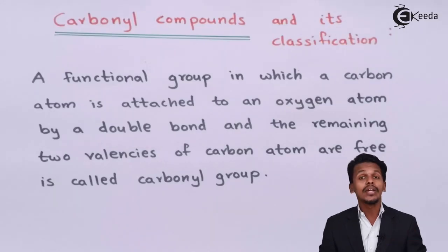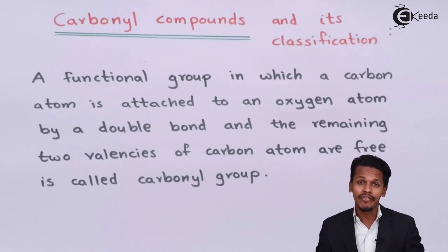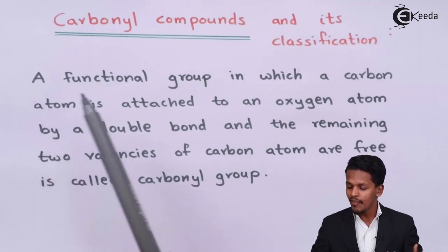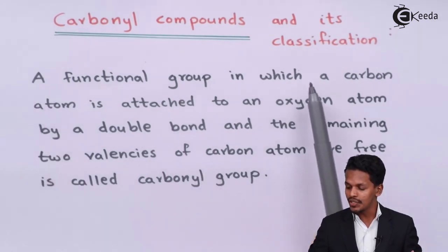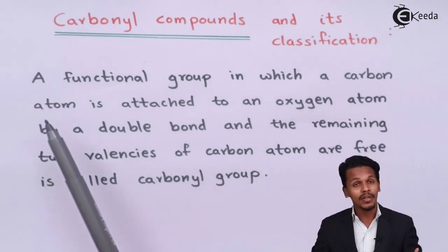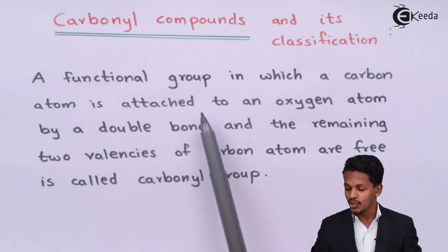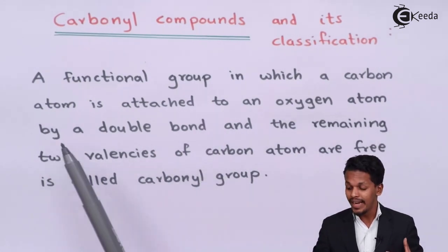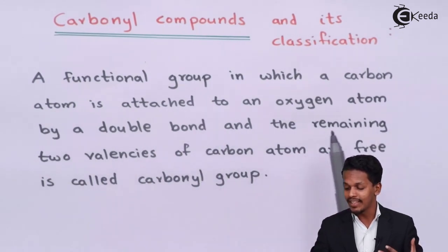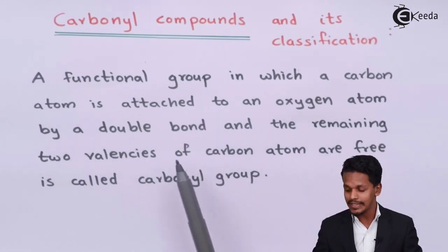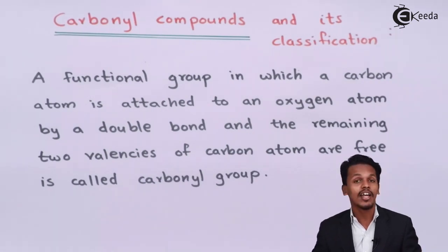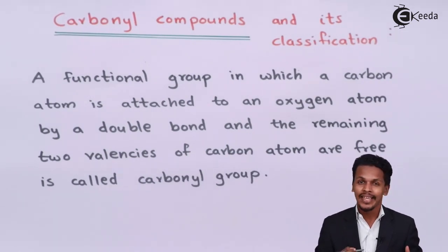Talking about the carbonyl group, let us understand its definition: a functional group in which a carbon atom is attached to an oxygen atom by a double bond and the remaining two valencies of the carbon atom are free is called the carbonyl group.